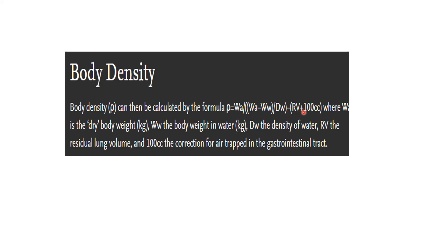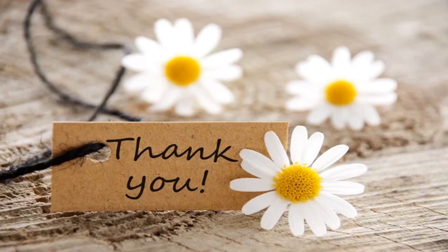The body density formula is: Density = WA / [(WA - WW) / Dw] - RV + 100cc. Where WA is body weight in air (kg), WW is body weight in water, Dw is the density of water, RV is residual lung volume, and 100cc is the correction for air trapped in the gastrointestinal tract. This concludes all the skills of biochemistry. Thank you for watching Viral DG Learning Zone.